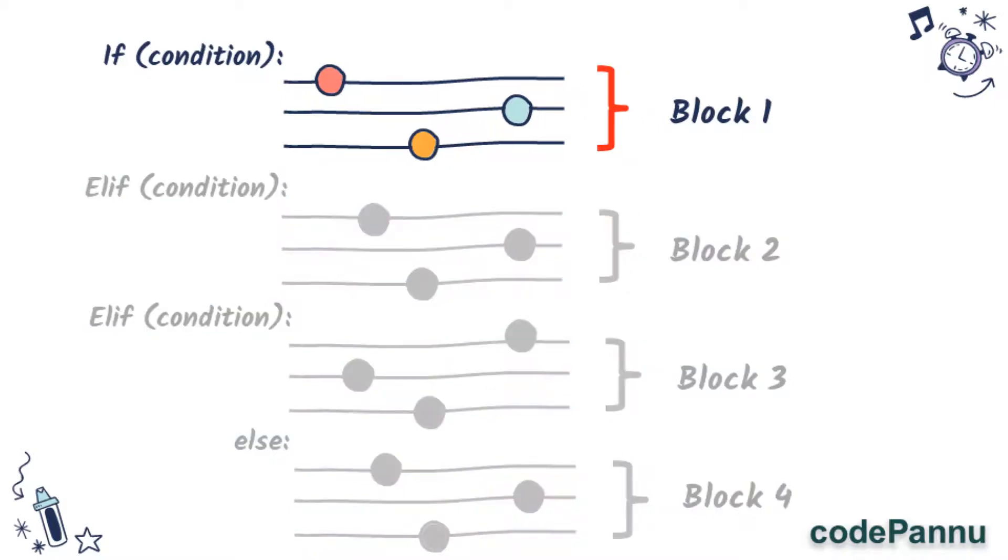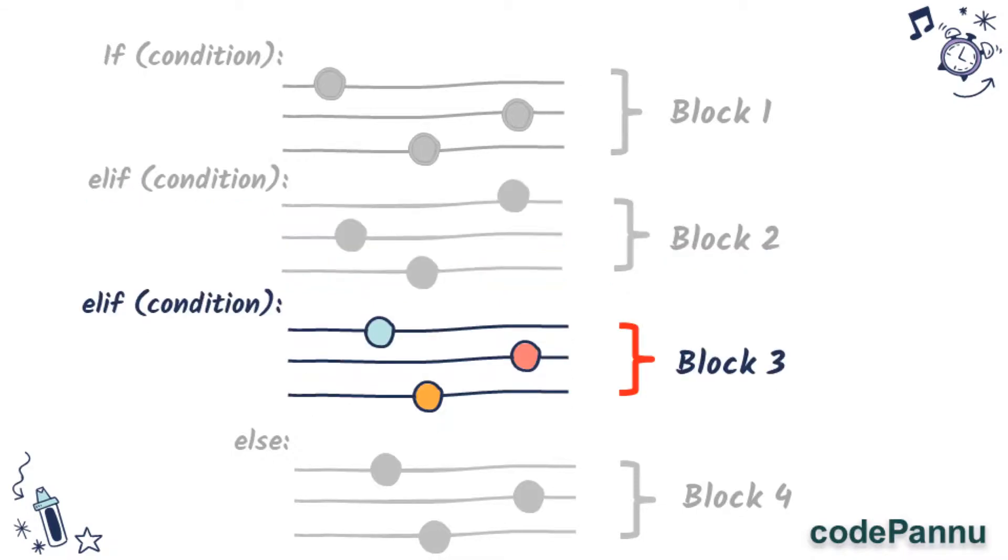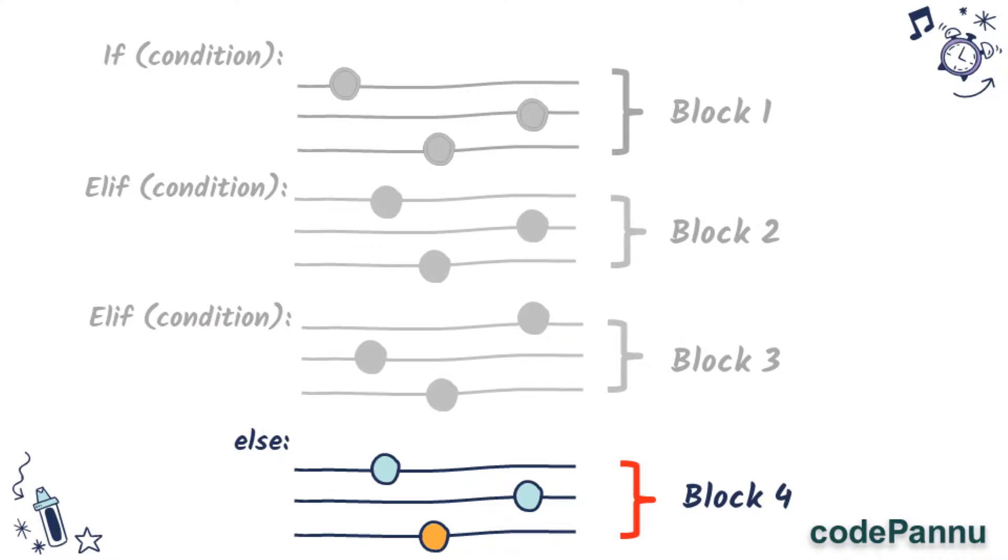We already know that for else we don't have to give a condition. So now the way Python will run the code is: it will check the condition in if. If it is true, it will run that block and it will complete the program. If it is false, it will go to the next elif block. If the condition given in the elif is true, then it will run the elif block and then complete the program.